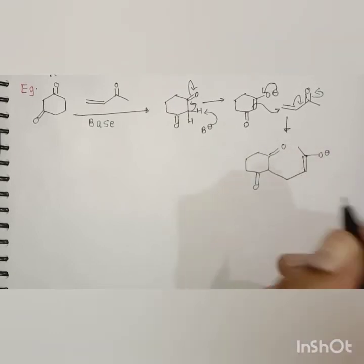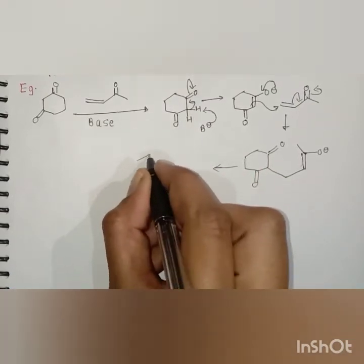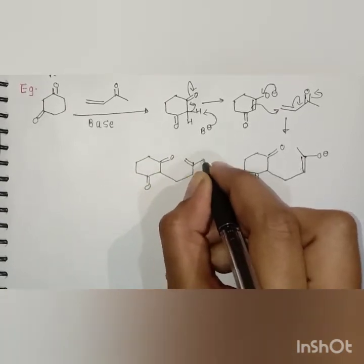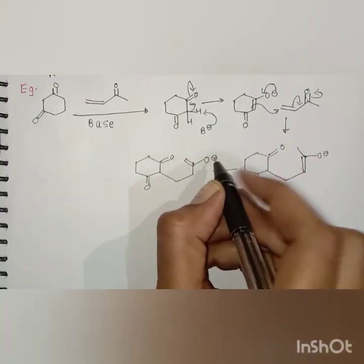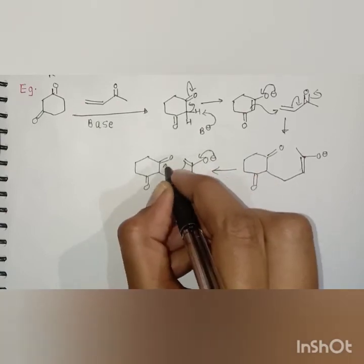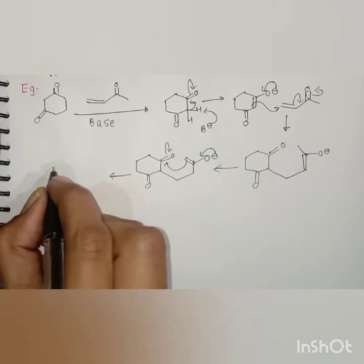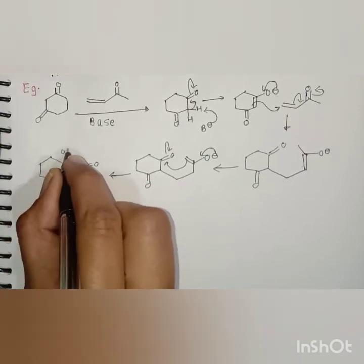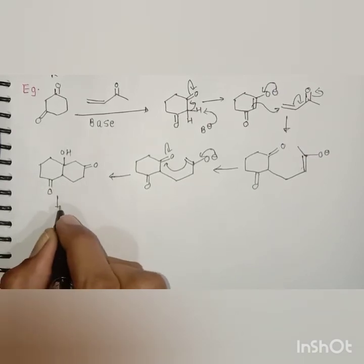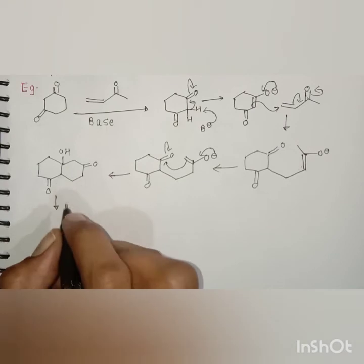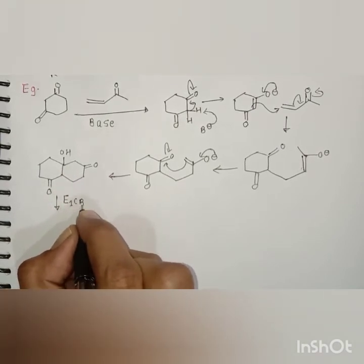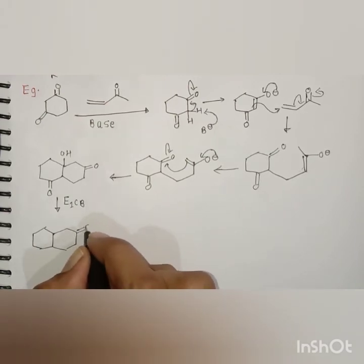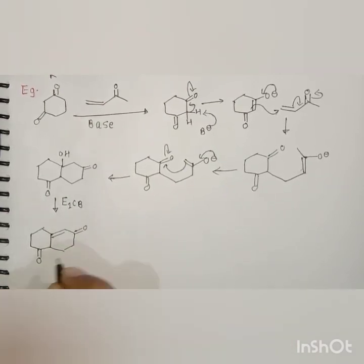Again here isomerization takes place, and we get this enolate. This enolate attacks on this carbonyl group, and formation of the beta-hydroxy carbonyl compound takes place. Again in basic conditions, the E1cb mechanism takes place, and we get the alpha-beta unsaturated system.